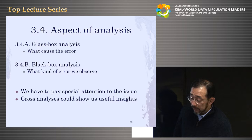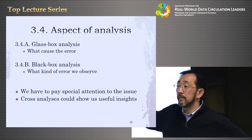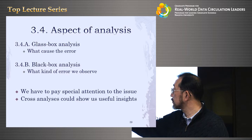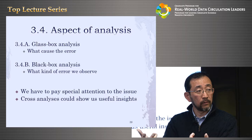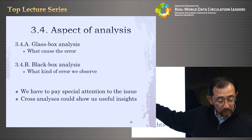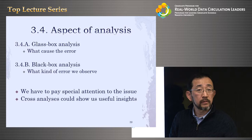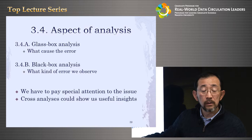Glass box analysis looks at what caused the problem — you examine the algorithm inside the system and try to find errors caused by specific components. Black box analysis looks at what kinds of errors we observe — looking at input and output and categorizing the errors. This is crucial: not many people understood this before. Some people mix glass box and black box error analysis, but they have to be separated.